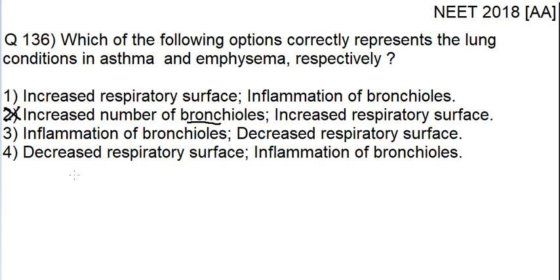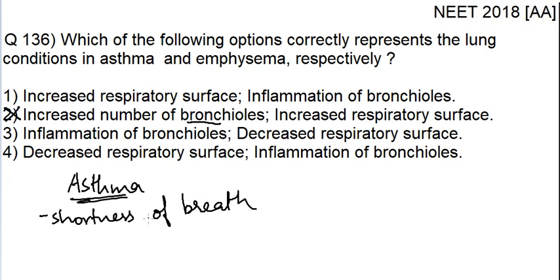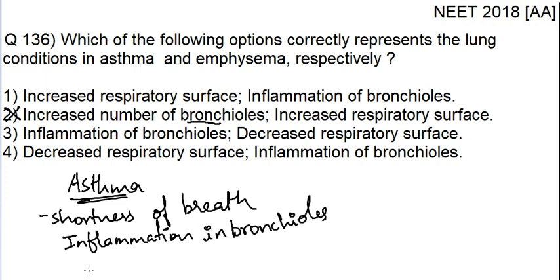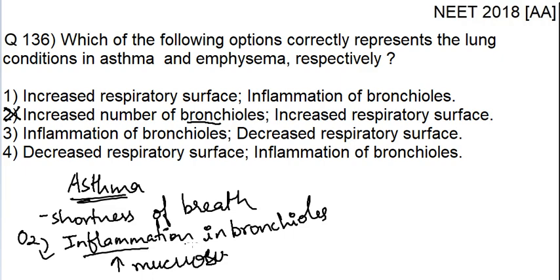Now let's discuss what happens in asthma. In asthma, there is shortness of breath. Why? Because of inflammation of the bronchioles. When there is inflammation in the bronchioles, there is excess secretion of mucus. When there is excess secretion of mucus, the lungs become really watery, leading to shortness of breath. A very small amount of oxygen is able to enter the lungs. So asthma is related to inflammation of bronchioles.